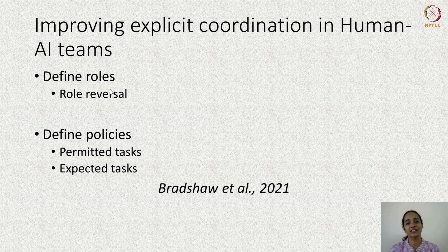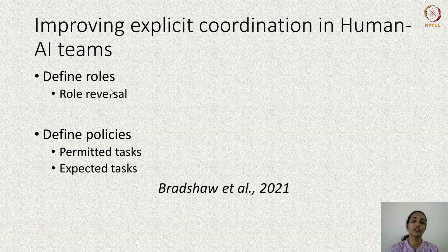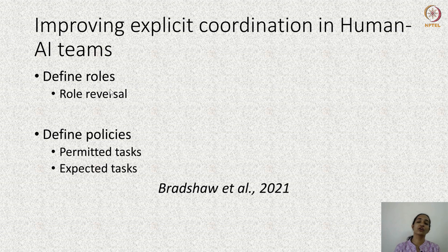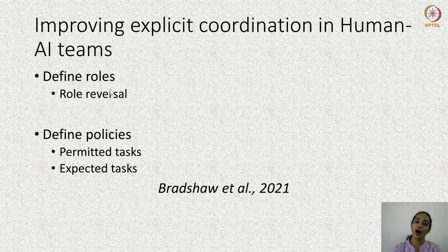To improve explicit coordination in human-AI teams, we can define roles and policies. Each team member should be aware of their roles and what is expected of them. For example, consider a team of robots, human rescue workers, and a technician approaching a burning building. The technician controls the robot, and the robot and rescue workers enter the building together. What should be the level of coordination between these three roles, and how should information be shared so team members are safe and can carry out their work properly?